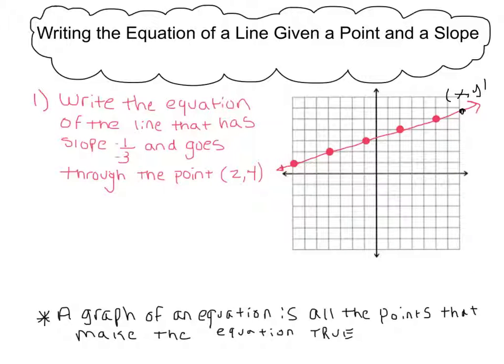Now if I find the slope between that variable point and any other point on that line, I know that it has to equal 1 over 3.